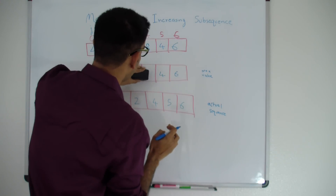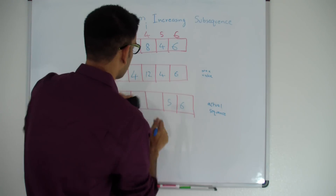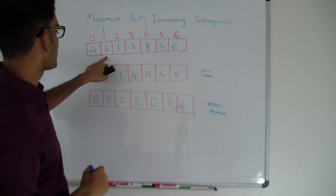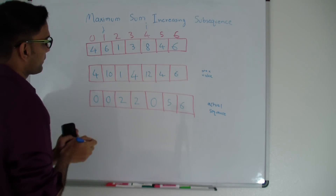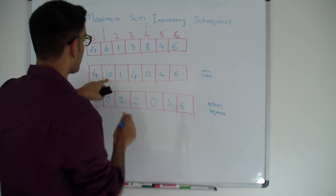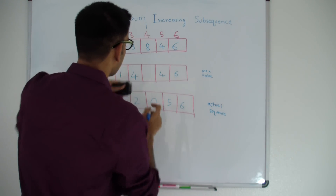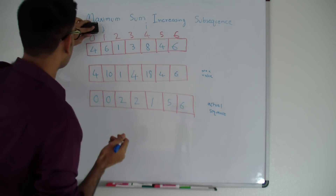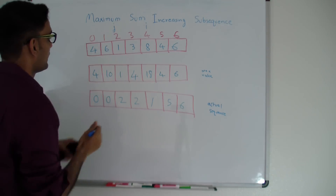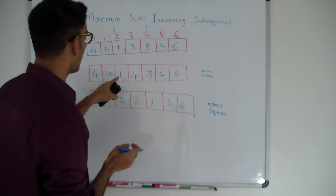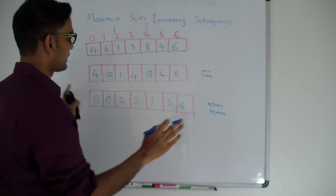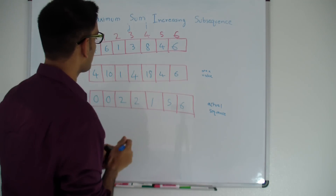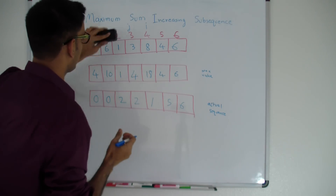Continuing i=4 (value 8): j=1 (value 6) is also less than 8, so the maximum increasing subsequence could be whatever we found till j=1, which is 10, plus 8 = 18. Since 18 is greater than 12, we replace and indicate this is coming from index 1. j=2 (value 1) is less than 8, giving 1 plus 8 = 9, but 9 is not greater than 18, so we do nothing. j=3 (value 3) gives 4 plus 8 = 12, also not greater than 18, so we do nothing.